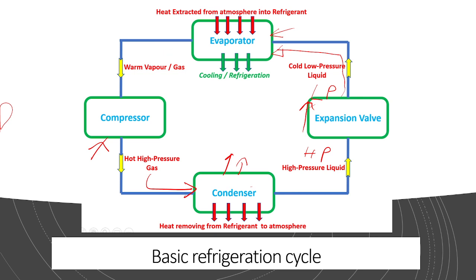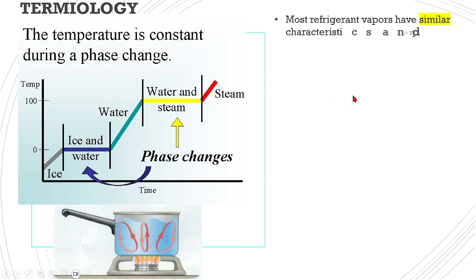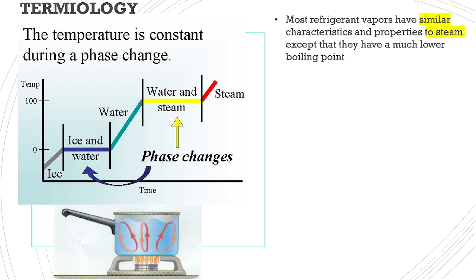This is the basic refrigeration cycle and we can just analyze thermodynamic properties. We can consider the refrigerant as water because most refrigerants and water behave almost similarly, except their operating temperature and pressure. For easy understanding of this thermodynamics, we will discuss the water, steam, and ice relationship.